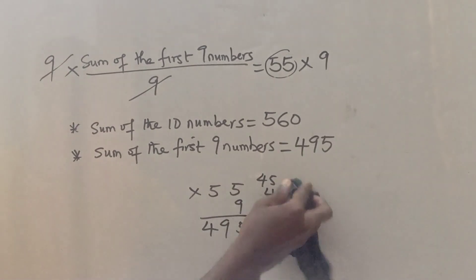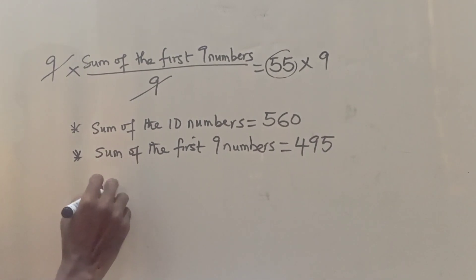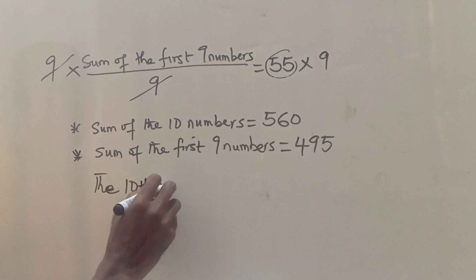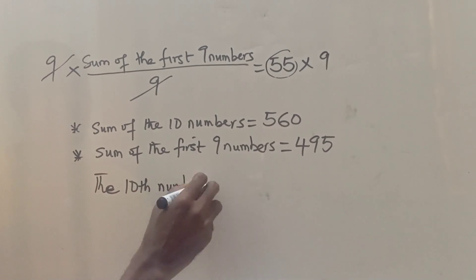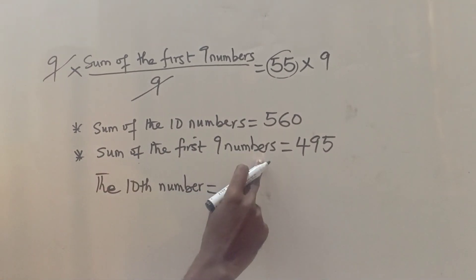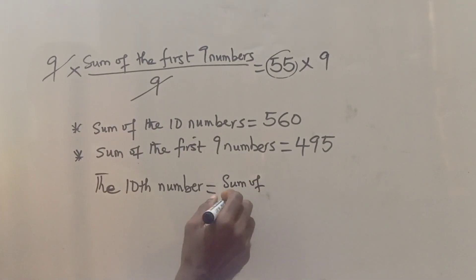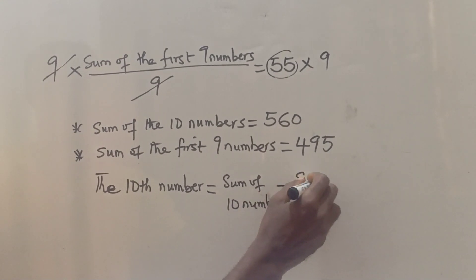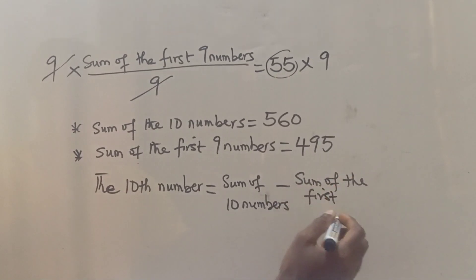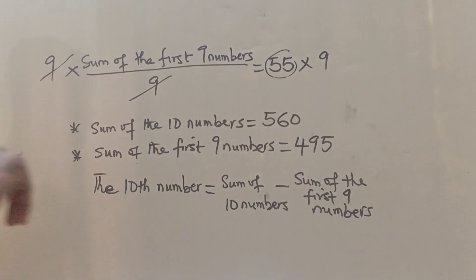All right, so from this, we can now find the tenth number. How do we find the tenth number? The tenth number will be the sum of the ten numbers minus the sum of the first nine numbers. That will give us the tenth number.